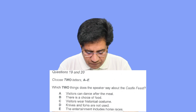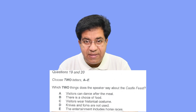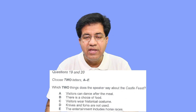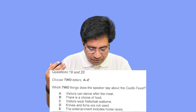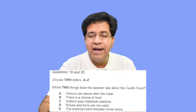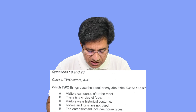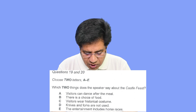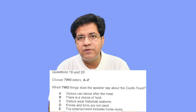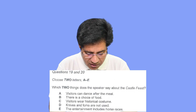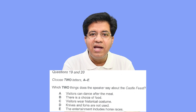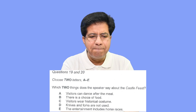Option A: 'visitors can dance after the meal.' For that they can say 'watch and join the dance after your dinner.' If they say visitors can only watch the dance after the meal and don't mention anything about joining, then this is a trap. Option B: 'there is a choice of food.' If they say 'we have a variety of food,' then this is the right answer. If they say 'we only offer sandwiches,' this is not right because sandwiches is no choice.